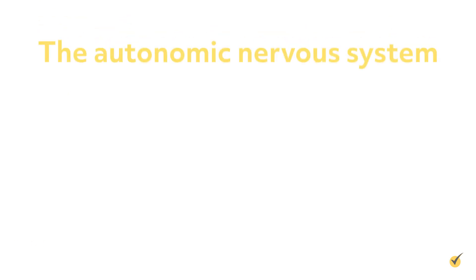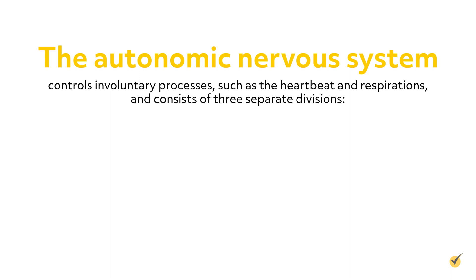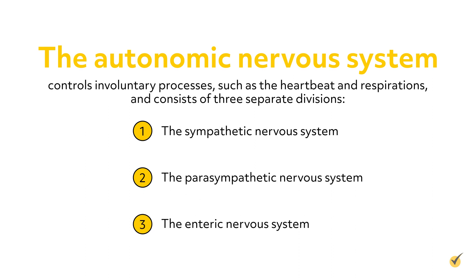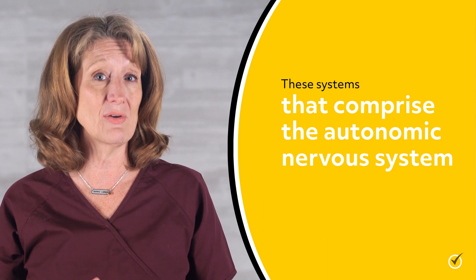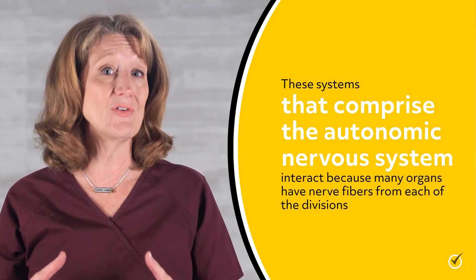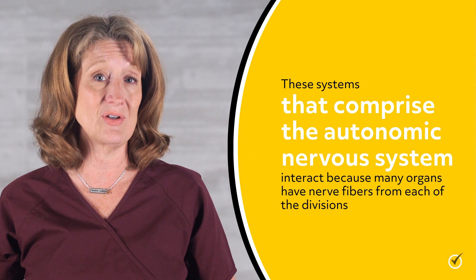The autonomic nervous system controls involuntary processes, such as the heartbeat and respirations, and consists of three separate divisions—the sympathetic nervous system, parasympathetic nervous system, and the enteric nervous system. These systems that comprise the autonomic nervous system interact because many organs have nerve fibers from each of the divisions.